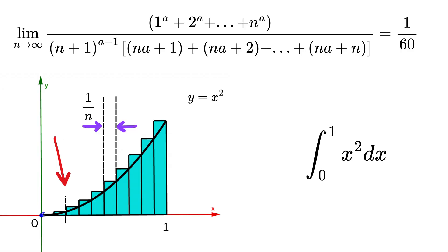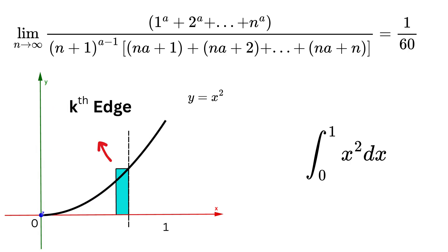Then pick the right edge of the first strip, second strip, and so on. As here x is 1 by n, here it is 2 by n, then here it is 3 by n and so on. So at some k the edge, this distance from the origin will be k over n, which means x equals k over n.